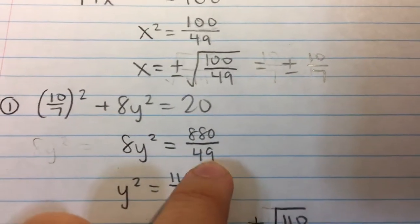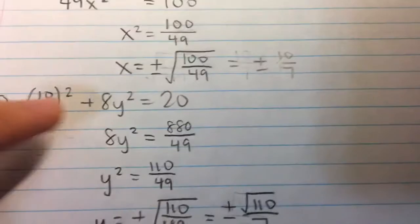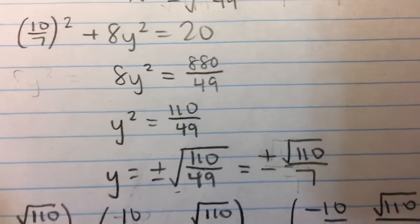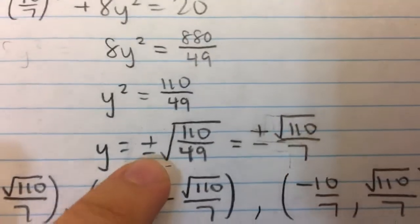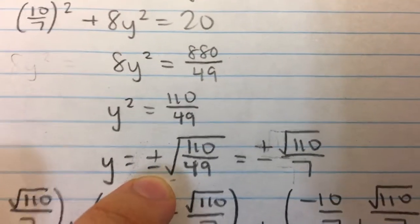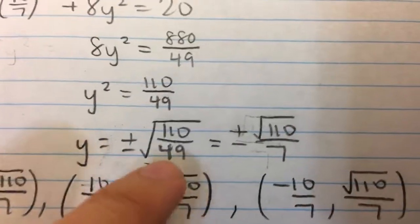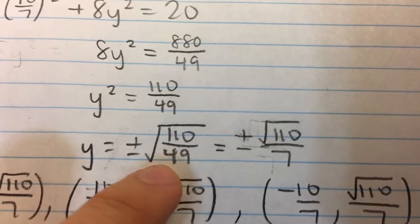It's kind of hard to do by hand, but on your calculator, you'll get 880 over 49. Divide both sides by 8 to get 110 over 49. Then take the square root. We get plus or minus the square root of 110 over 49, which is the square root of 110, which can't be simplified, over the square root of 49, which is 7.